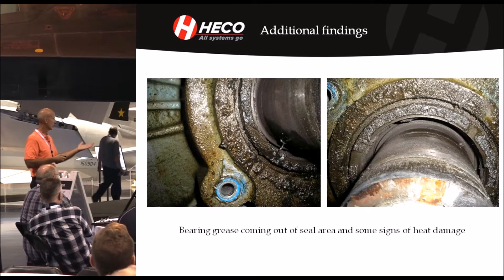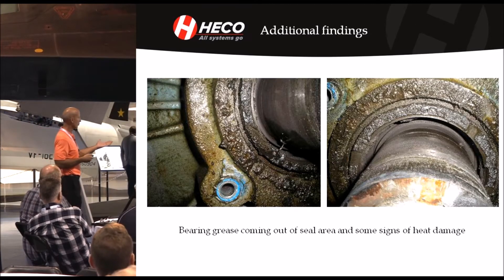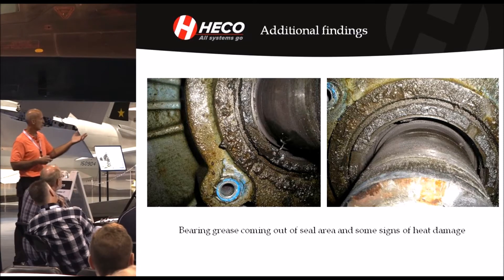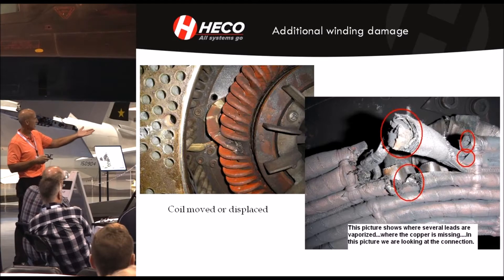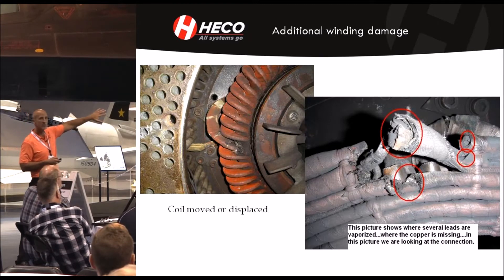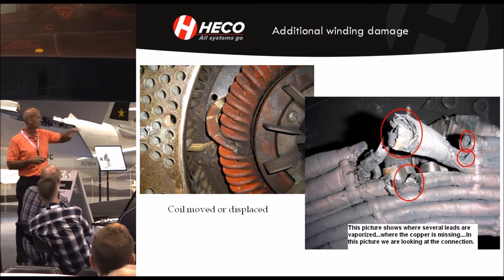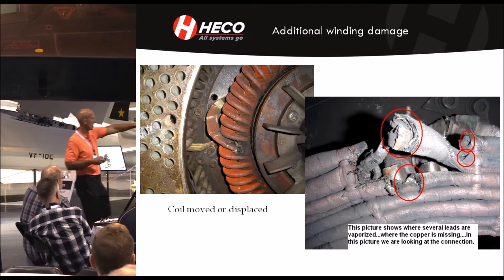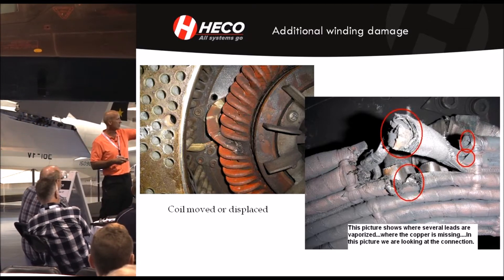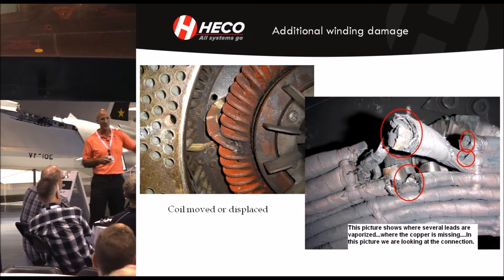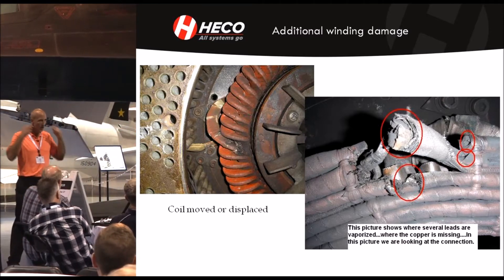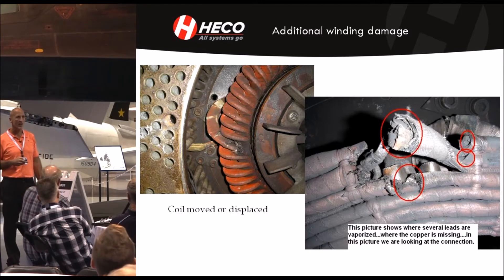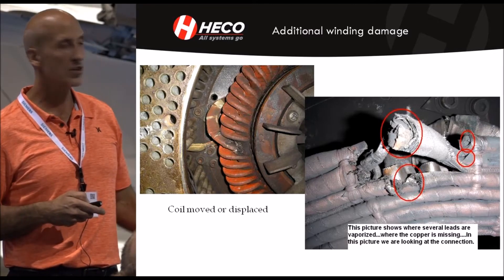As we dug into the motor further, we saw grease coming out of the motor, quite a bit of heat damage, and we couldn't tell what was going on yet. Internally we had a dislodged coil — so I'm thinking okay, transient surge, something's going on — and we had vaporizing of connections on the connection end. Another strange thing that doesn't normally happen, triggering some thoughts, so we continued to look.